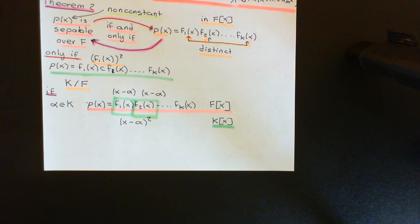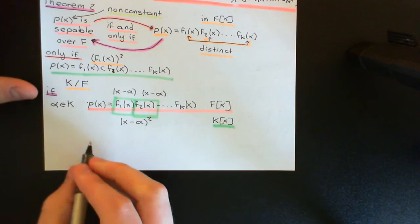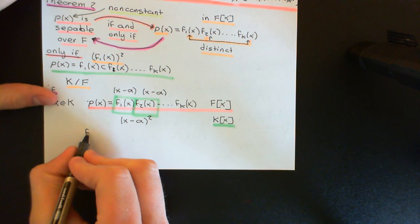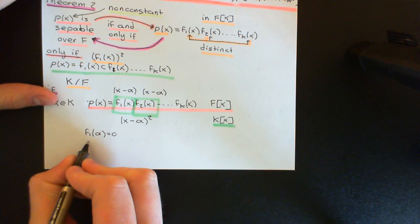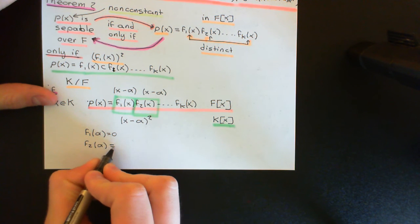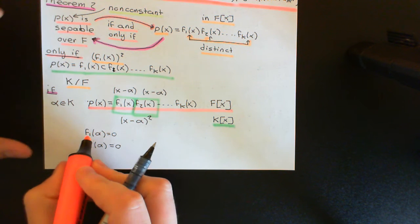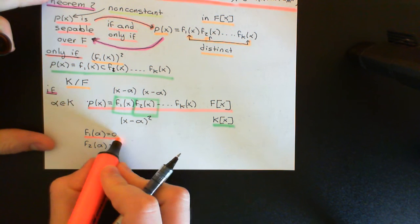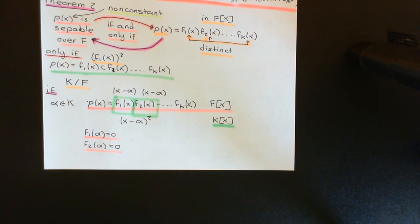Therefore (X − alpha) must appear in the linear factorisations of two different irreducible factors — say F₁(X) and F₂(X). So F₁(alpha) = 0 and F₂(alpha) = 0. This allows me to conclude that F₁(X) and F₂(X) are not distinct — they must be associates of one another.